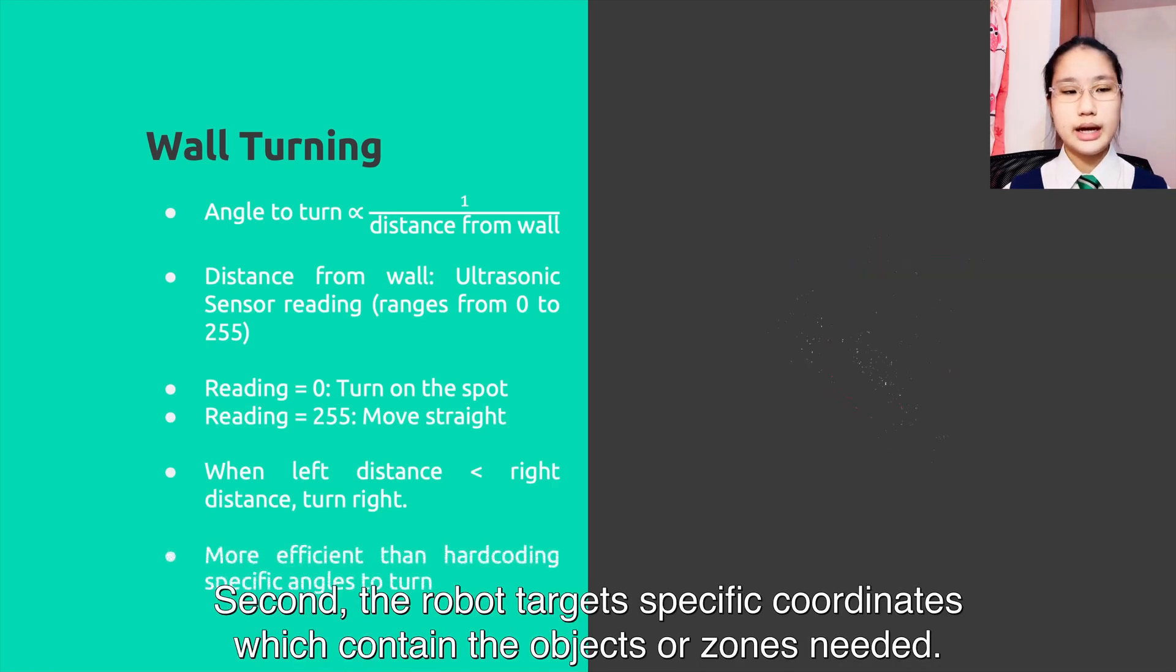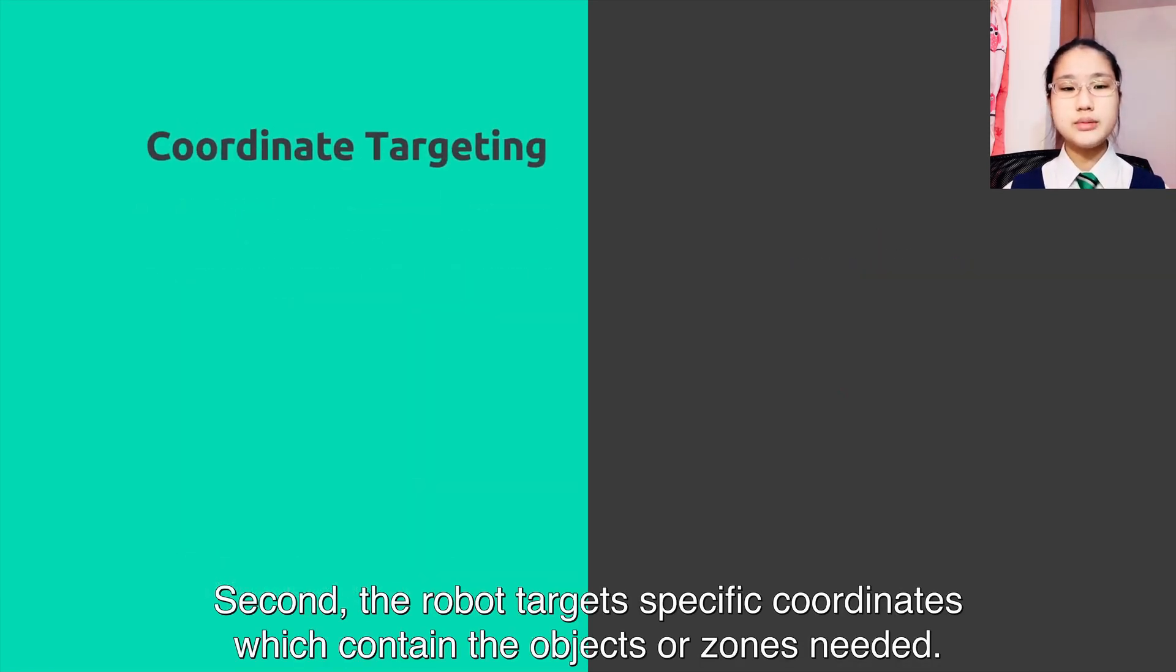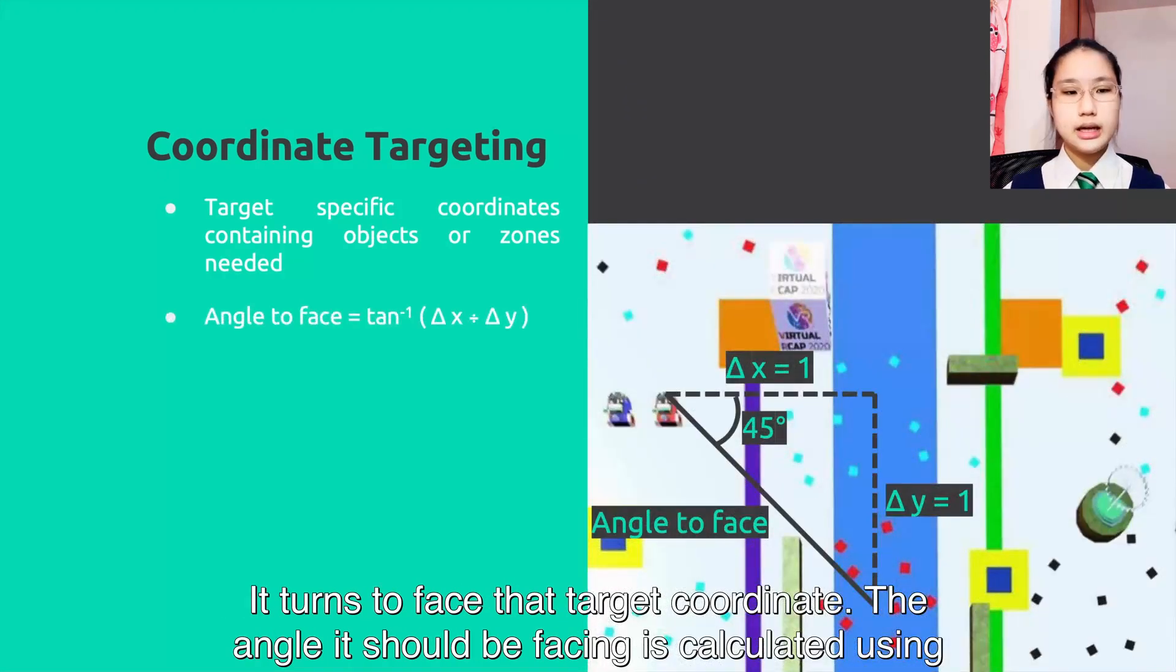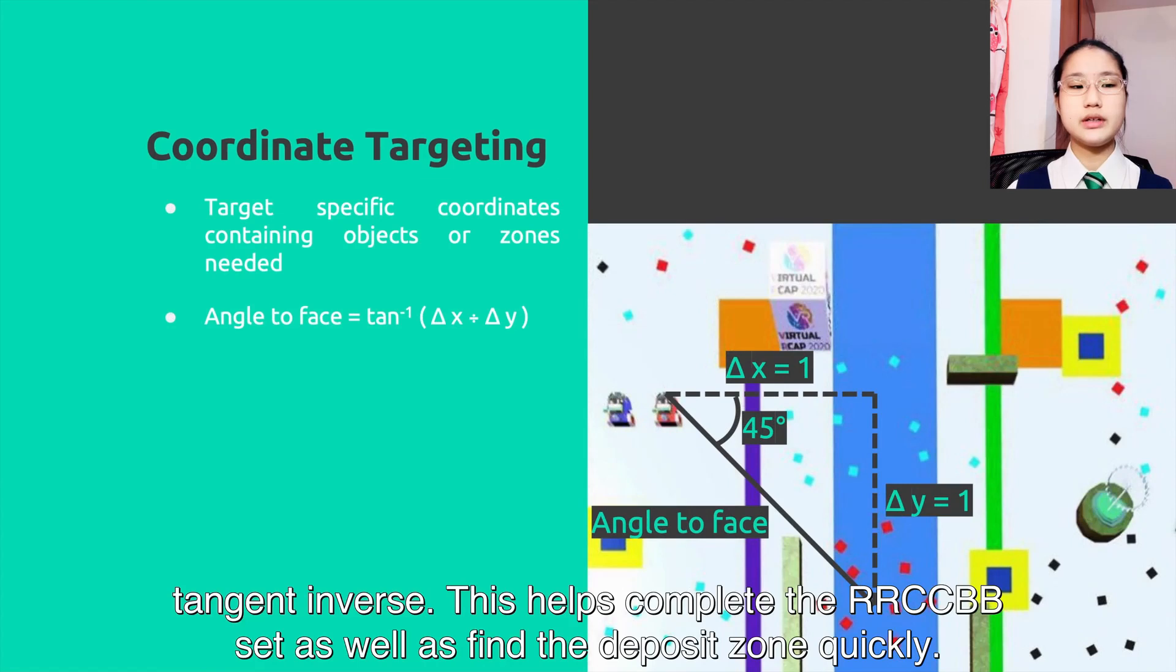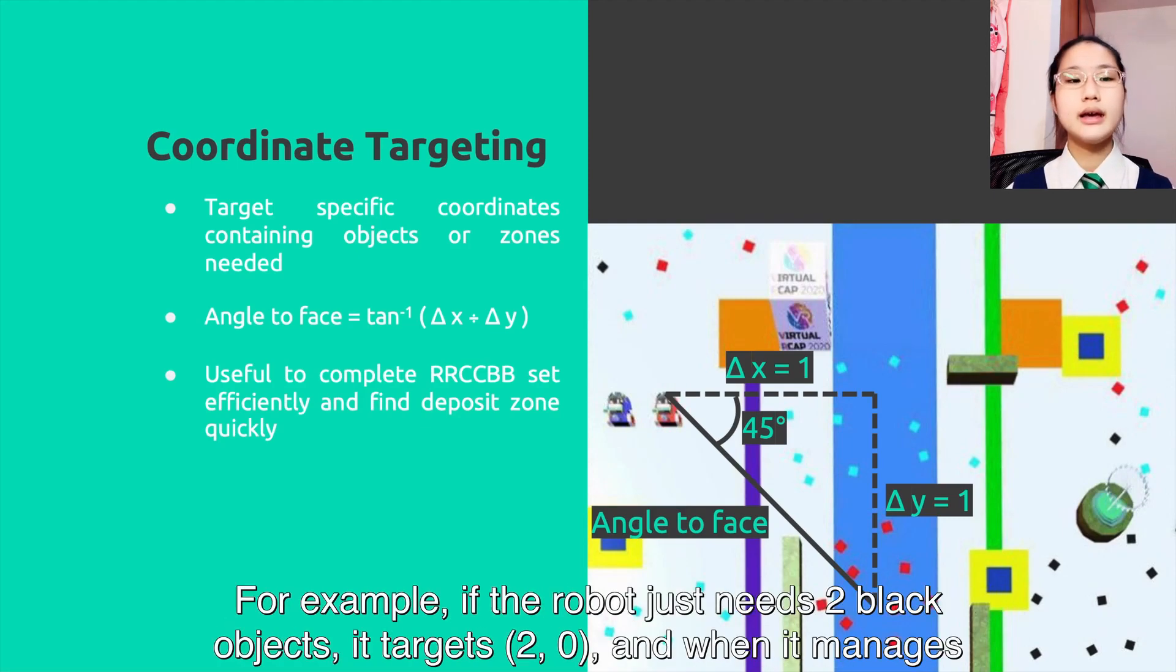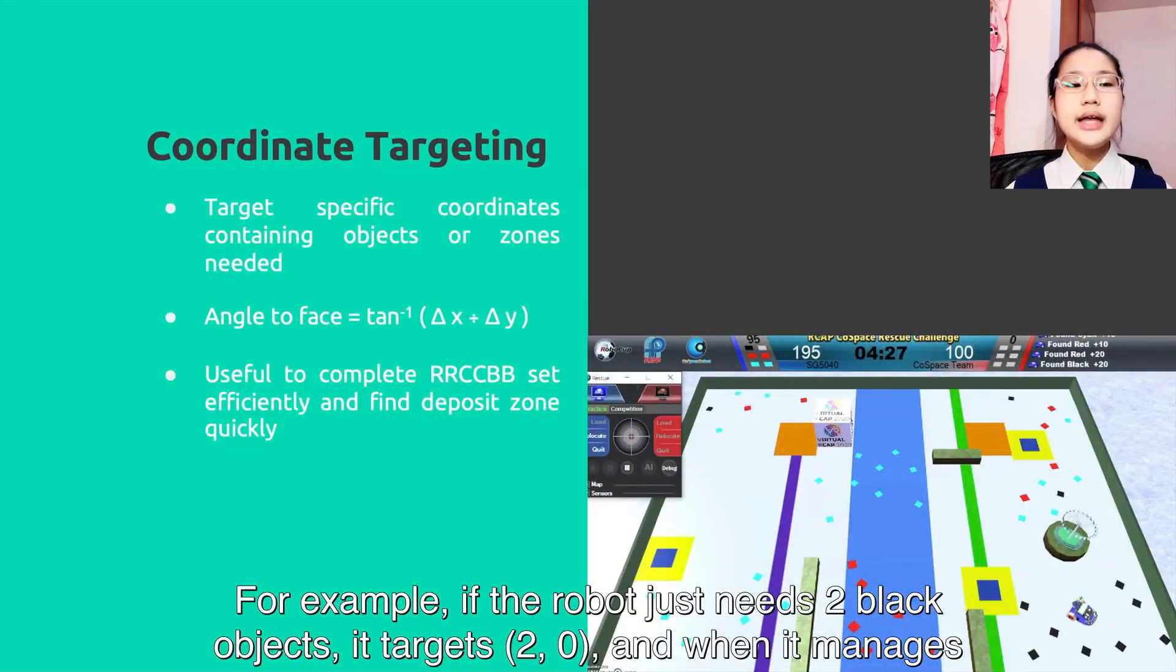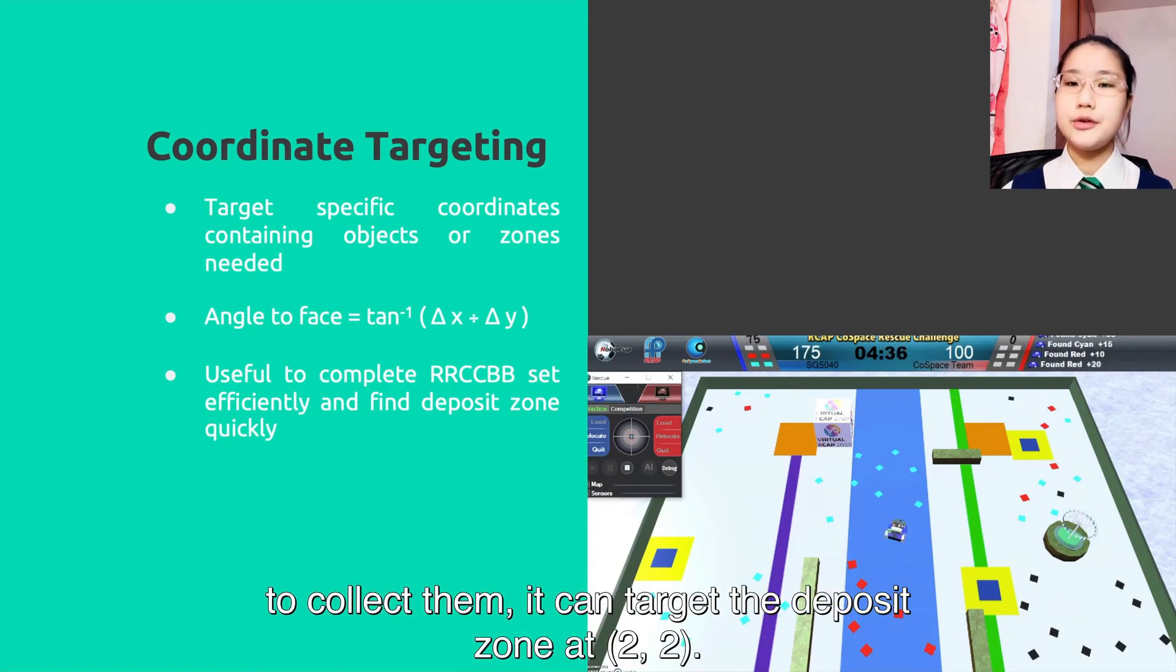Second, the robot targets specific coordinates which contain the objects or zones needed. It turns to face the target coordinates. The angle it should be facing is calculated using inverse tangent. This helps complete the RRCCBB set as well as find the deposit zone quickly. For example, if the robot just needs two black objects, it targets 2-0. And when it manages to collect them, it can target the deposit zone at 2-2.